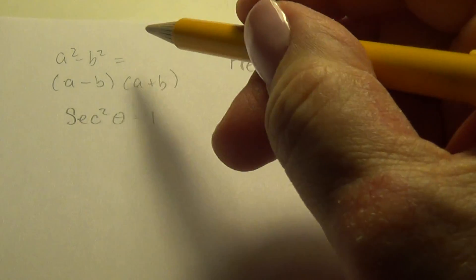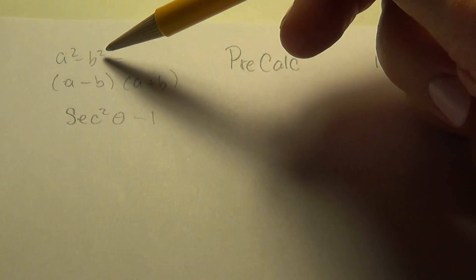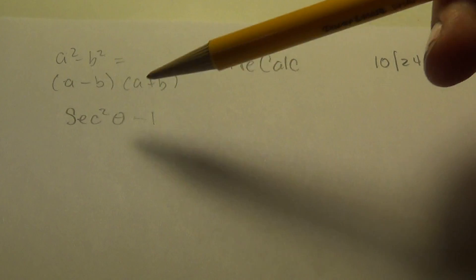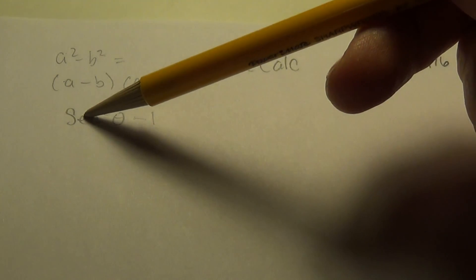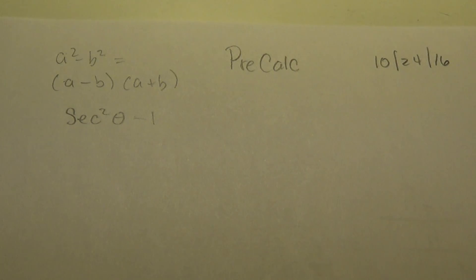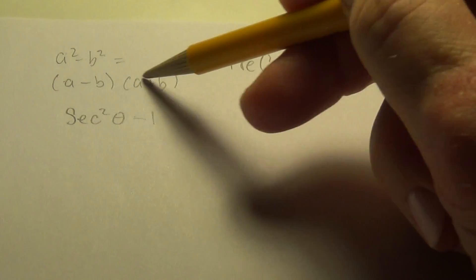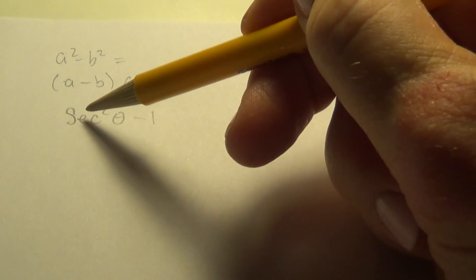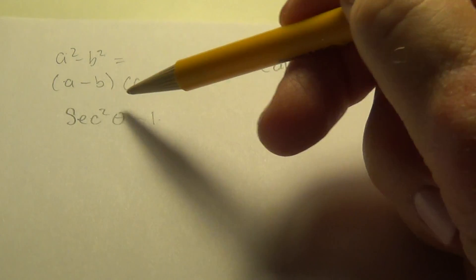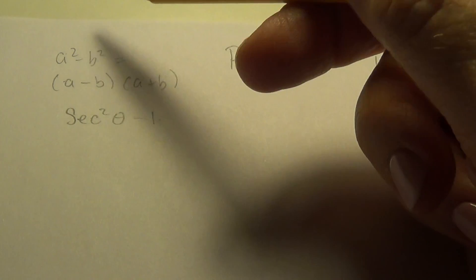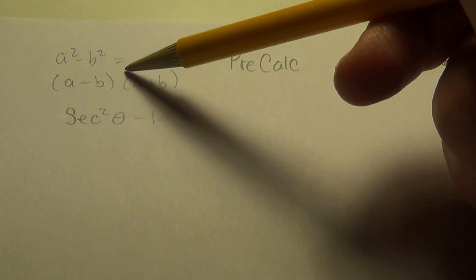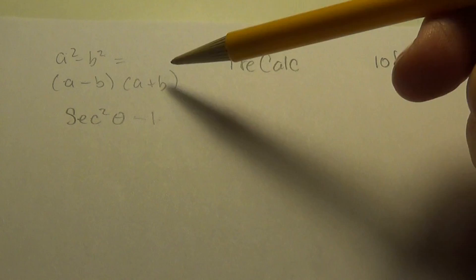So we have to recognize a squared minus b squared. And here it is, a squared minus b squared. This is something squared, and this is something squared. So we can apply this form. So instead of writing it as something squared minus something squared, the first thing squared minus the second thing squared, I'm going to write it like this.